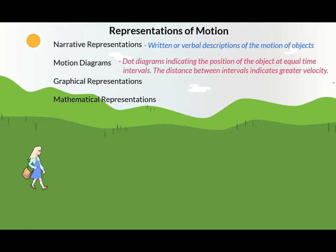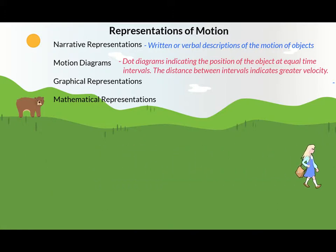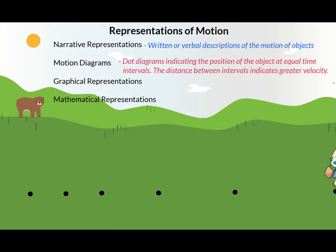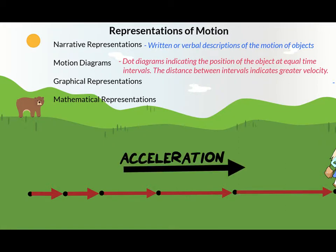Now let's look at another example. Imagine Amber is taking her walk through the park when off in the distance she sees a bear, so she decides to run. If we continue to place dots at equal time intervals, we would see that the spacing between those dots increases with each interval. Connecting those dots with velocity arrows shows that this increased spacing represents her increasing velocity, or her acceleration, which points in the direction of the longest velocity arrows.